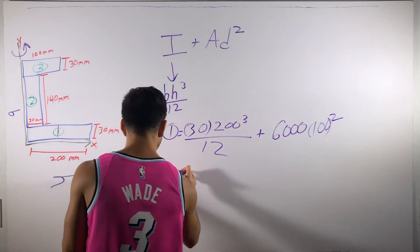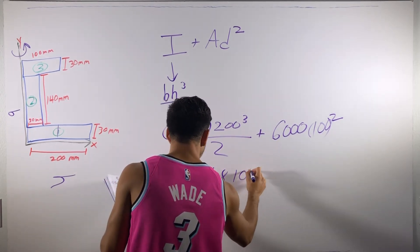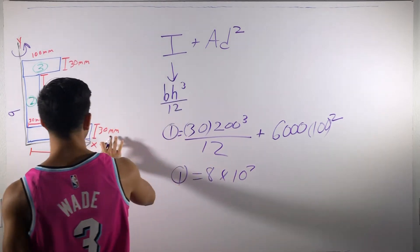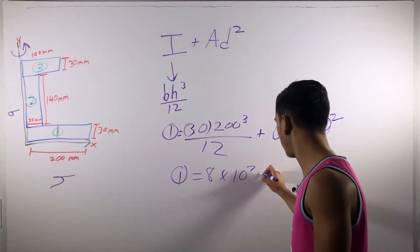And now, if you compile all that together, it's going to give you 8 times 10 to the seventh. And don't forget your units. Since it's in millimeters for moment of inertia, it's going to be whatever they give you, whatever you're working with.